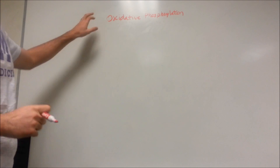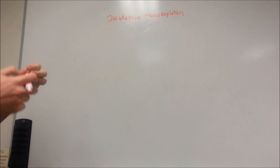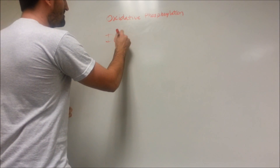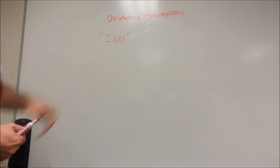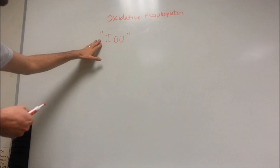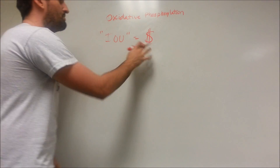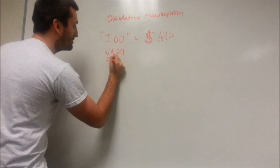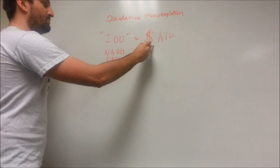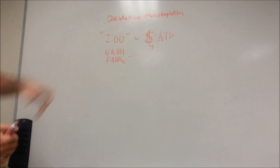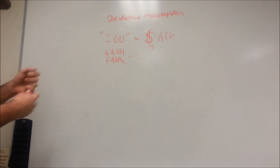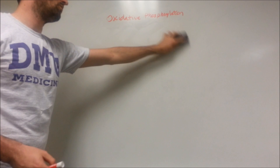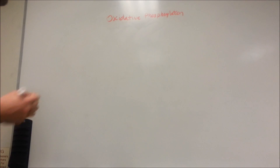Let's finish off our conversation on energy with oxidative phosphorylation, also known as the electron transport chain. We're simply taking all the IOU notes we created earlier through glycolysis, the pyruvate dehydrogenase mechanism, and the TCA cycle, and we're going to cash them in for ATP — the body's form of money. We're taking all these NADH and FADH2 molecules and turning them into ATP.